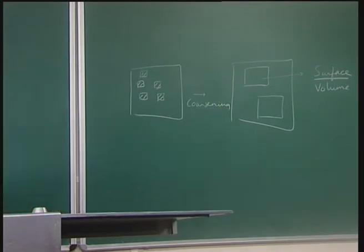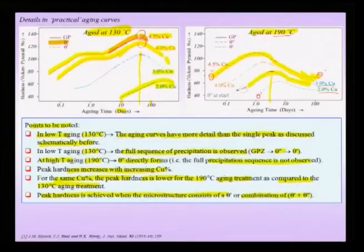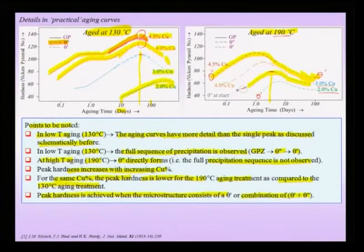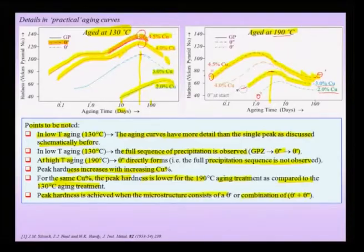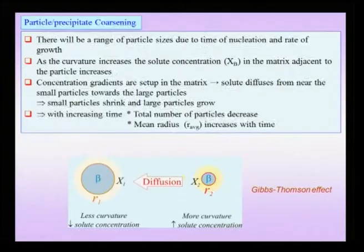To avoid coarsening — where the overall volume fraction of precipitate does not increase but only the number decreases and the volume-to-surface-area ratio decreases — one strategy is to use a low interfacial energy between precipitate and matrix. This is especially important when the application involves high temperatures for the alloy. We can thus obtain and maintain a fine scale distribution of precipitates for a long time.